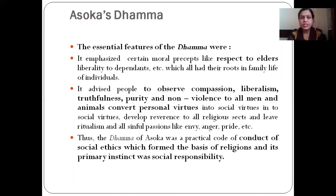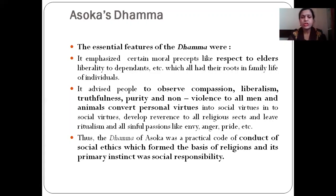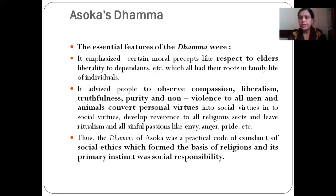The essential features of dharma emphasized certain moral practices like respect to elders, liberality to dependents, which all had roots in the family life of individuals. It advised people to observe compassion and kindness, liberalism, truthfulness, purity, and non-violence to all men and animals. It sought to convert personal virtues into social virtues, and social virtues develop reverence to all religious sects and shun sinful traits like anger, pride, and enmity. Thus the dharma of Ashoka was a practical code of social ethics whose primary distance was social responsibility — everyone has to do his own duties, give respect to elders, love to the young, and look after the needy and poor.